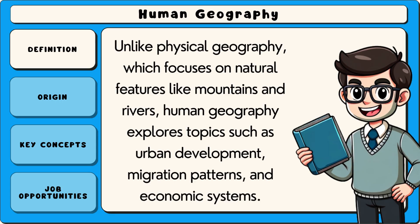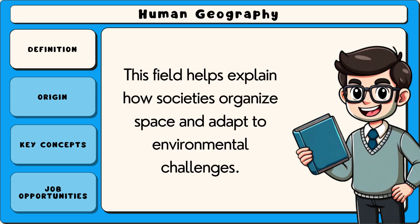Unlike physical geography, which focuses on natural features like mountains and rivers, human geography explores topics such as urban development, migration patterns and economic systems. This field helps explain how societies organise space and adapt to environmental challenges.